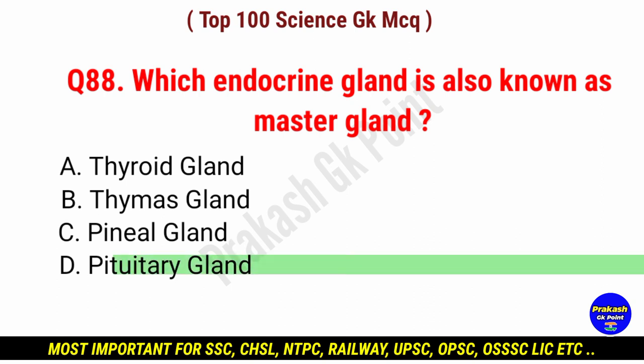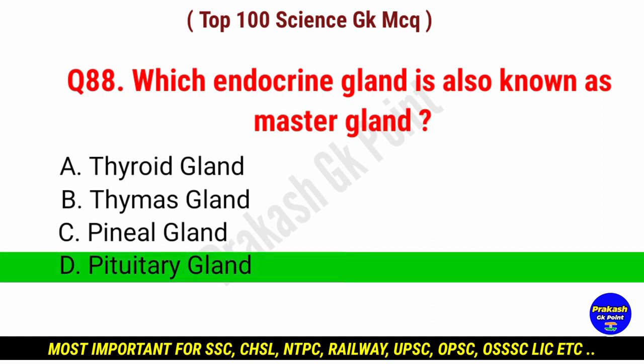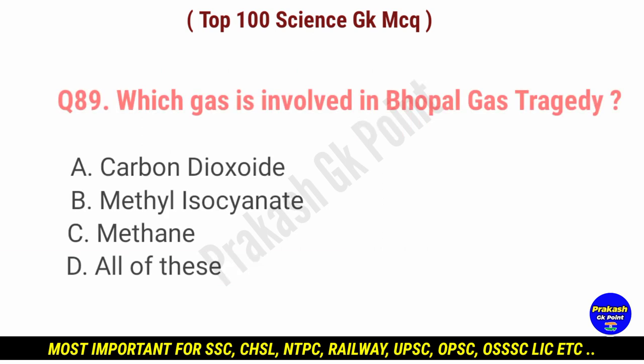Which endocrine gland is also known as master gland? Answer: option D, pituitary gland.